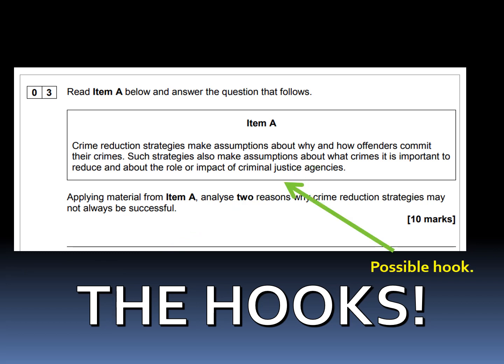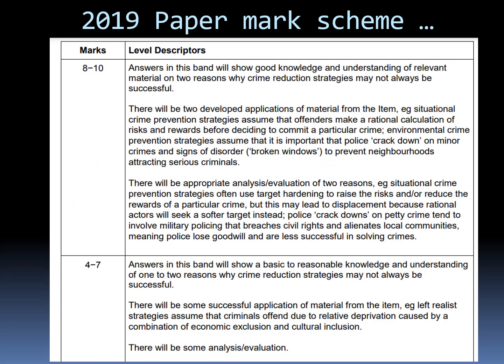This item has a third hook, which is a potential third reason to choose from: there are also assumptions about the role or impact of the criminal justice agencies. The mark scheme is also super important because it will give you some clues about what you could write about for each of these hooks.